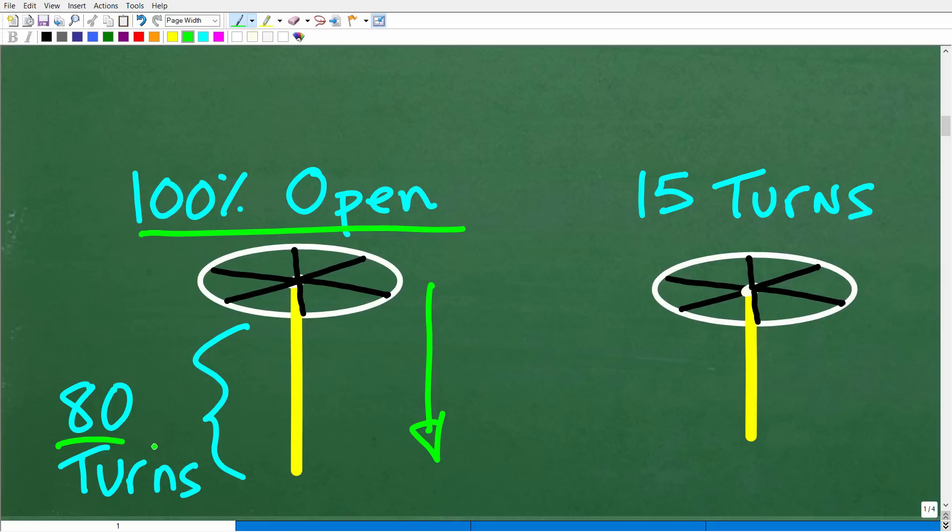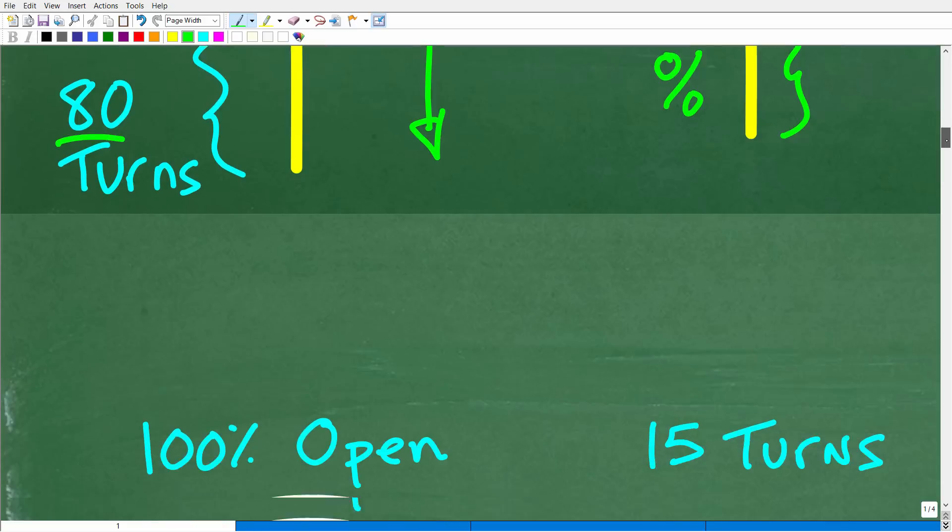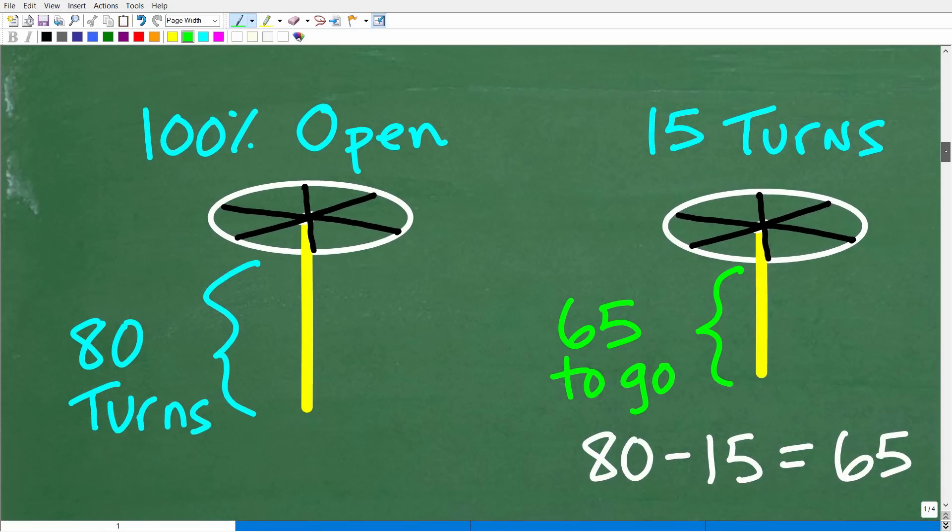Now, I'm starting the process of closing the valve. Matter of fact, I already turned the valve 15 turns. So the question is, what percent of the job remains, right? So I want to shut this valve 100%. So what percent of the job remains? Well, we might want to add more detail to our little diagram here.